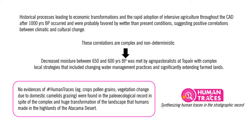In the context of the Human Traces Working Group, no evidence of human traces — for example, crop pollen grains or vegetation changes due to domestic animal grazing — were found in the paleoecological record, in spite of the complex and huge transformation of the landscape that humans made in the highlands of the Atacama Desert.